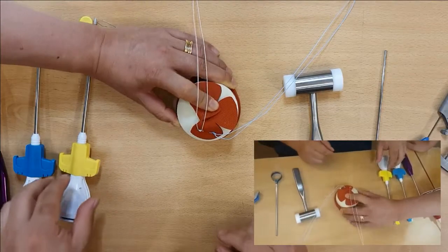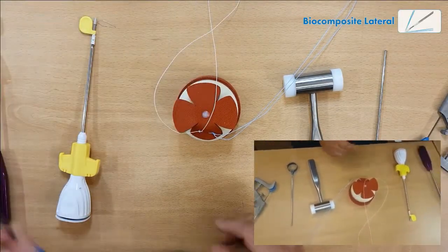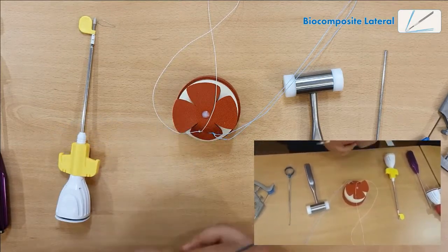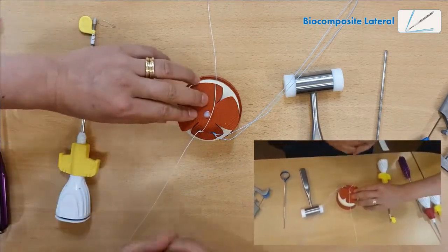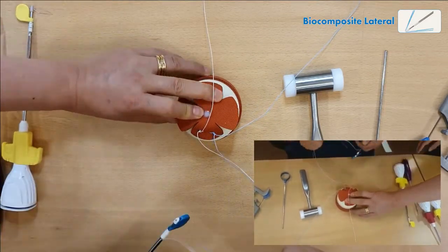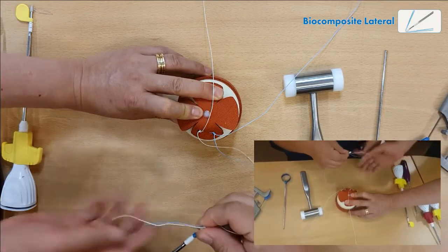Now, I'm going to use the biocomposite lateral anchor. Just pass one of the strands from the fiber wires that you passed on the medial wall, just pass it through the eyelet.